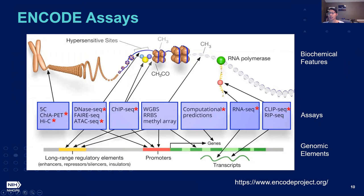We have approaches for looking at long-range interactions between chromatin regions — for example, Hi-C and ChIA-PET assays — as well as approaches for assaying histone modifications and transcription factor binding. We have the use of computational predictions of genes and their relationship to regulatory elements, and also approaches like RNA-seq and CLIP-seq for looking at transcription and the binding of proteins to RNA.